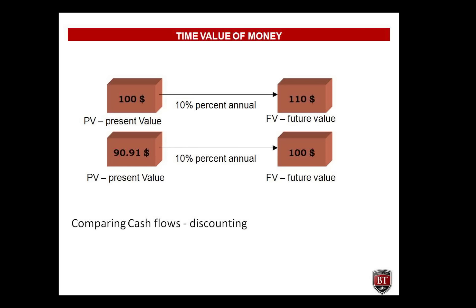In order to calculate and understand what Net Present Value is, you need to understand that money has a time value. Assuming a 10% interest rate, $100 invested today will be worth $110 in one year — $100 multiplied by 1.1. Conversely, $100 received one year from now is only worth $91.91 today — $100 divided by 1.1 — assuming a 10% interest rate.